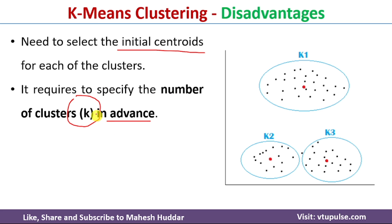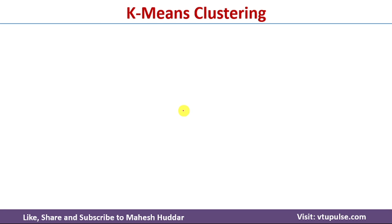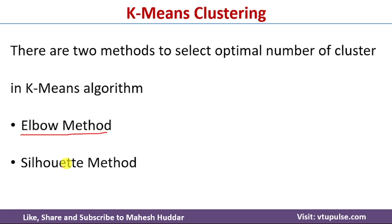In this video, I will discuss how we can identify an optimal value of k for the given dataset. That can be done with the help of two methods. The first method is called the Elbow method, and the second one is called the Silhouette method. First, we will discuss the Elbow method to identify the optimal number of clusters.